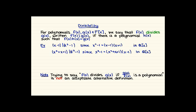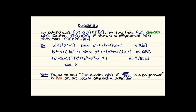For an example over one of our Z mod p fields: x squared plus 2x plus 2 divides x to the fourth plus 2x cubed plus x squared plus x minus 2. This is in Z mod 3 adjoin x, since (x squared plus 2x plus 2)(x squared minus 1) equals x to the fourth plus 2x cubed plus x squared plus x minus 2.